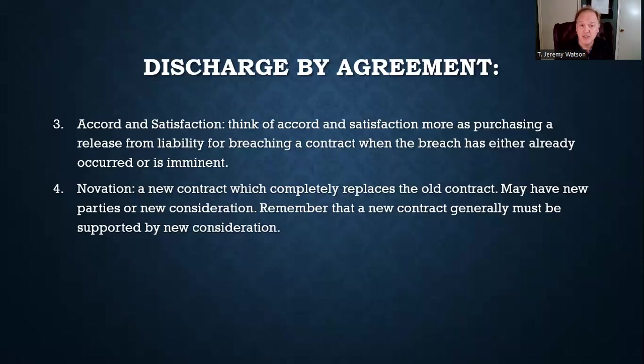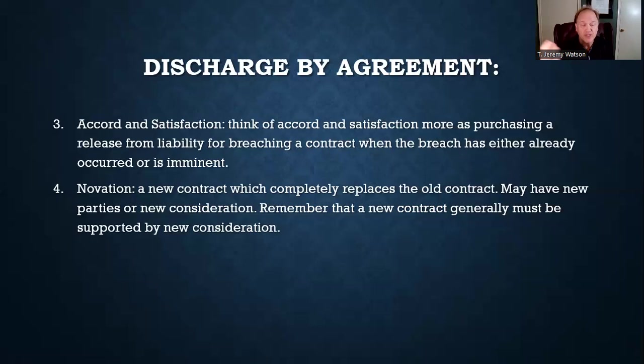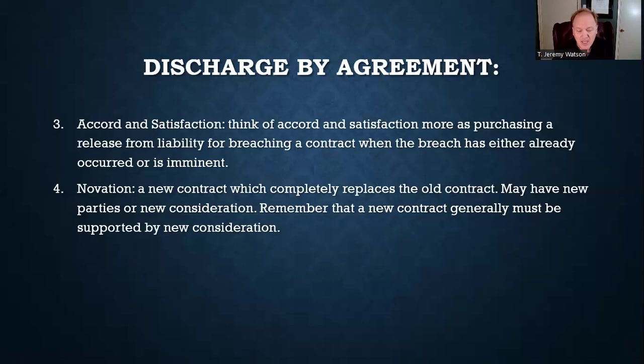To summarize discharge by agreement: rescission is where the parties mutually agree to throw out the contract before they ever really start. Modification is where the parties mutually agree to change one or more obligations — and remember, a modification must be supported by independent consideration. Accord and satisfaction is where you substitute one performance for another and then actually perform it, satisfying the contract. And novation is where you throw out the entire old contract and replace it with an entirely new one.